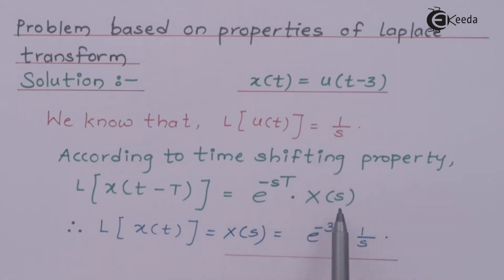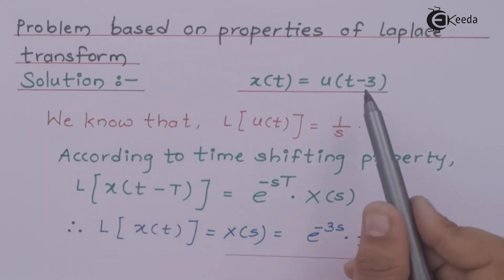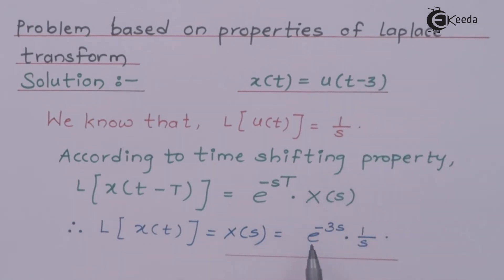So the result of x(s) is 1/s, whereas this e^(-s) is multiplied by this delayed value which is minus 3. So the result is e^(-3s) × 1/s. This is the simplest way to calculate the Laplace transform using the properties.